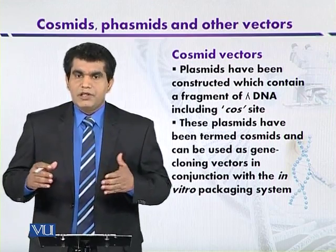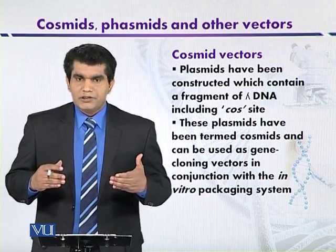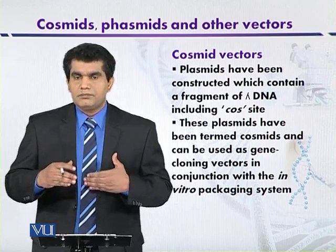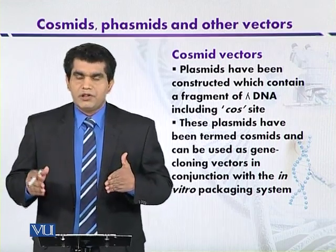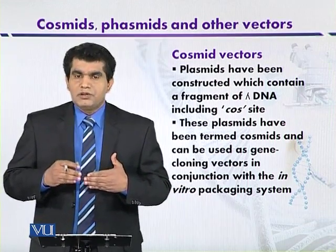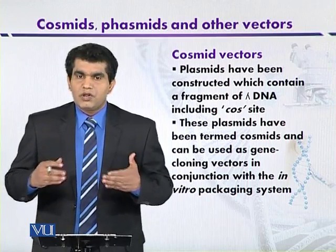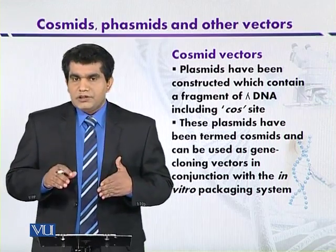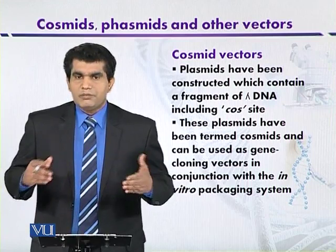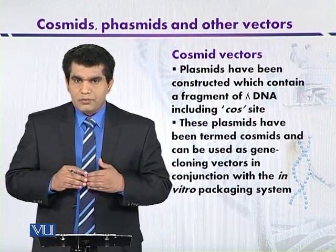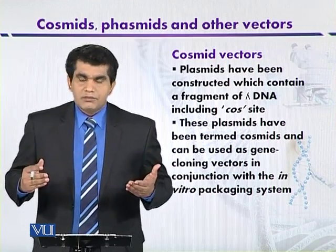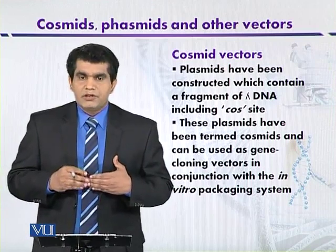When recombinant cosmids are produced, the in vitro packaging system is provided. It is composed of bacterial crude extracts that supply all the essential proteins for packaging the foreign DNA into the phage head particles. Once packaged into the phage head particles, it can be used to effectively infect suitable host organisms like E. coli. It inserts its genomic DNA, which is now a recombinant cosmid, after injection. The recombinant cosmid, by using the cos site, can then assume the circular form. This efficient transformation of the host organism is one advantage of the cosmid vector.